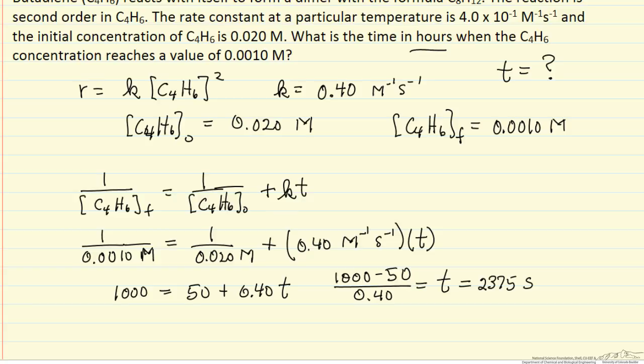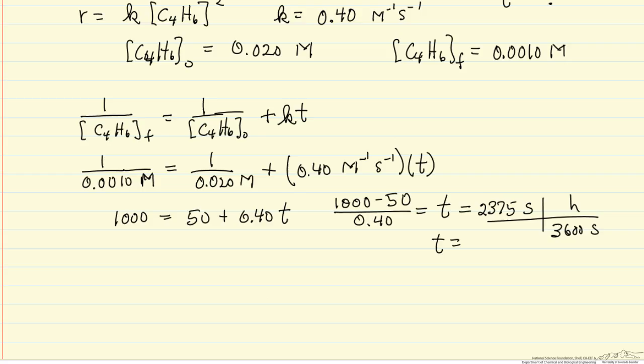The problem wants the time in hours, so 3,600 seconds per hour, and we end up with a time of 0.66 hours, and we have two significant figures in our data, so time to two significant figures.